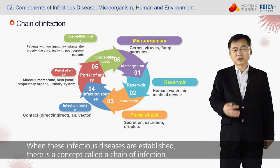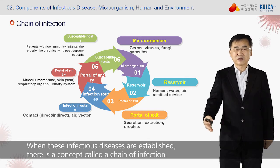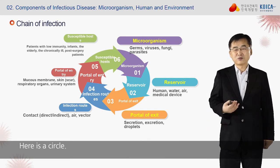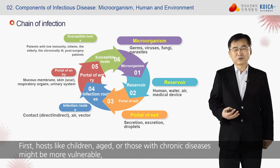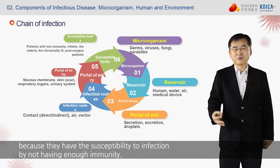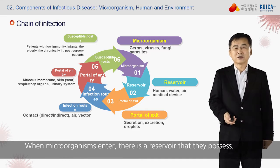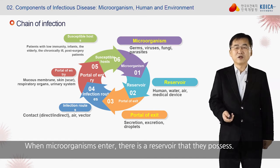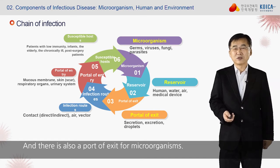When infectious diseases are established, there is a concept called a chain of infection. Here is a circle. First, hosts like children, the aged, or those with chronic diseases might be more vulnerable because they have susceptibility to infection from not having enough immunity. When microorganisms enter, there is a reservoir that they possess, and there is also a port of exit for microorganisms.